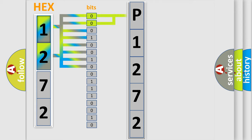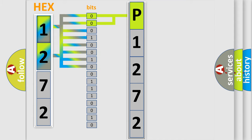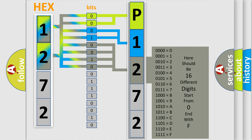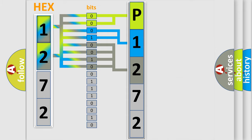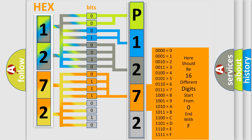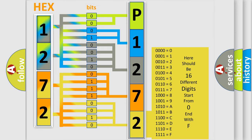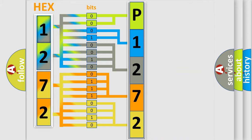By combining the first two bits, the basic character of the error code is expressed. The next two bits determine the second character. The last bits of the first byte define the third character of the code. The second byte is composed of a combination of eight bits: the first four bits determine the fourth character, and the last four bits define the fifth character. A single byte conceals 256 possible combinations.